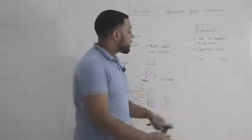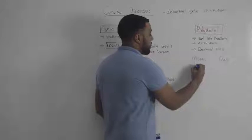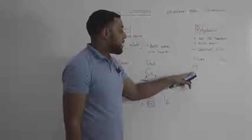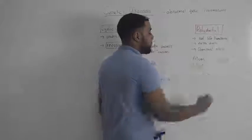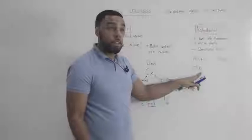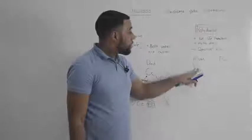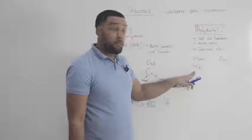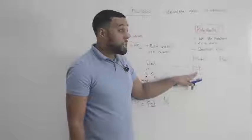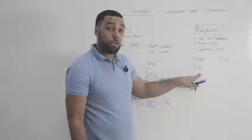And we'll use capital H to represent polydactyl and lowercase h to represent the healthy allele. So we can see here that the mom carries the allele for polydactyl, so she will have extra fingers or toes.